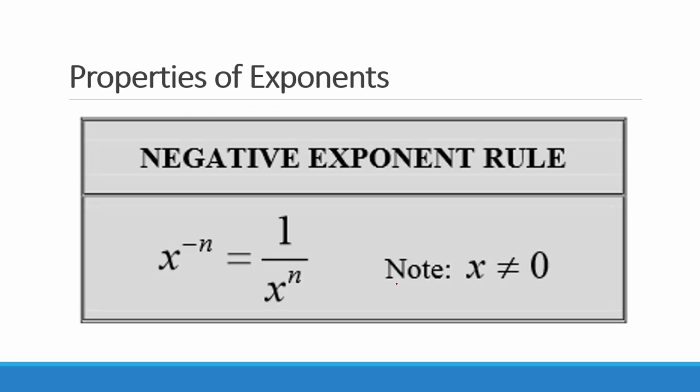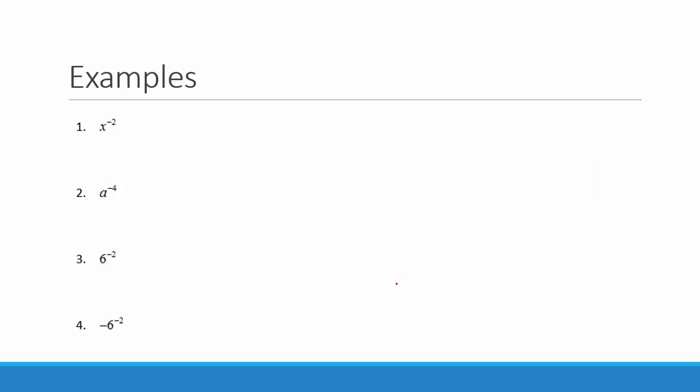Our next property is the negative exponent rule. A negative exponent on a variable will move it to the denominator, and then the exponent becomes positive. X to the negative n is equal to 1 over x to the positive n. Note, x cannot equal 0. In our first example, x to the negative 2 is equal to 1 over x to the positive 2.